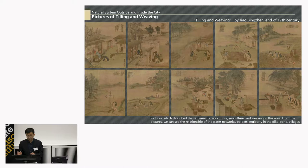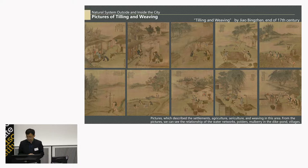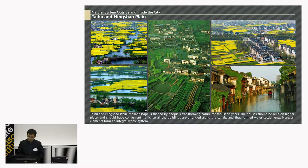Around the 17th century, a painter, Zhao Bingzheng, painted a total of 46 pictures — here we can see only 10. The pictures describe the settlements, agriculture, cereal culture, and the living in this area. From the pictures, we can see the relationship between the water networks, the polders, and the ponds, the villages, and also the people who are working.